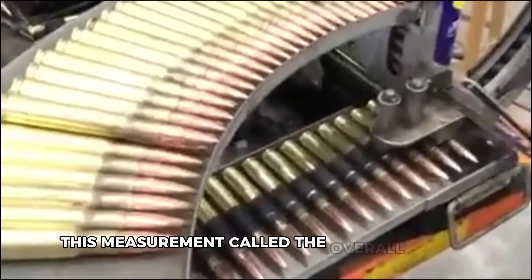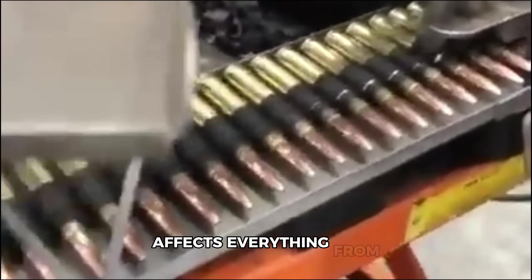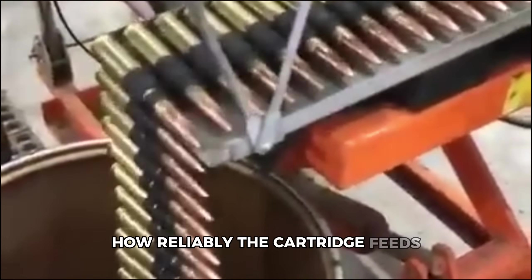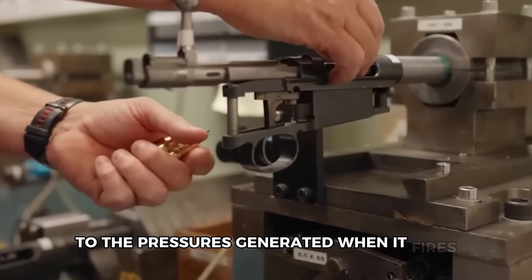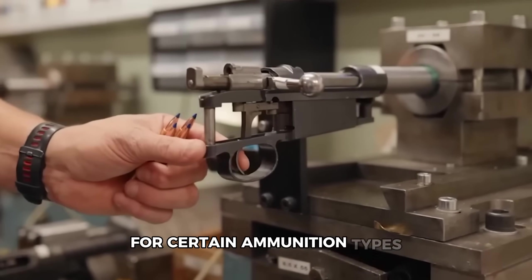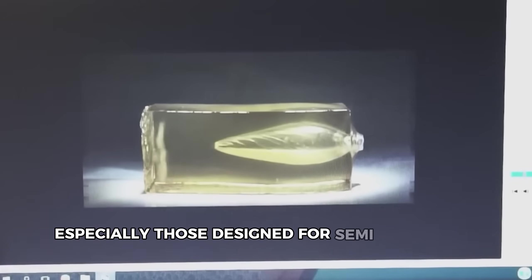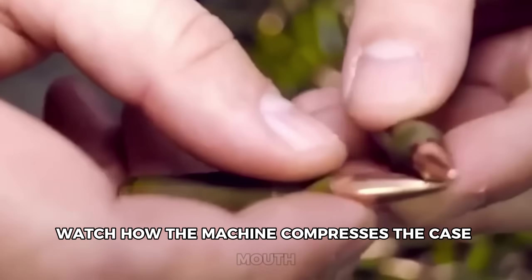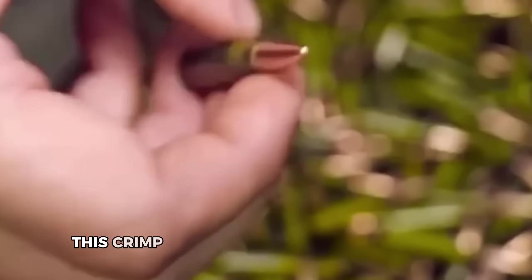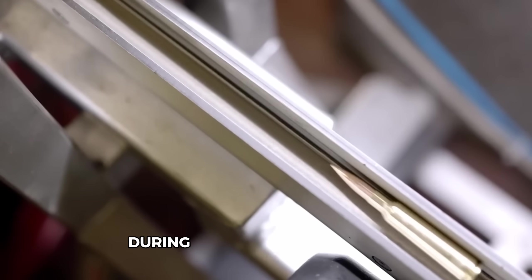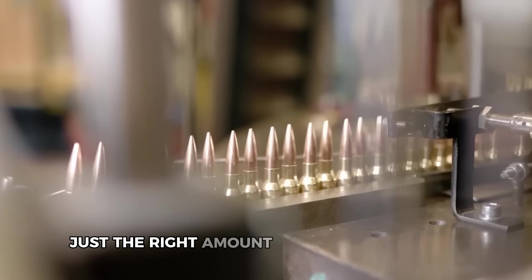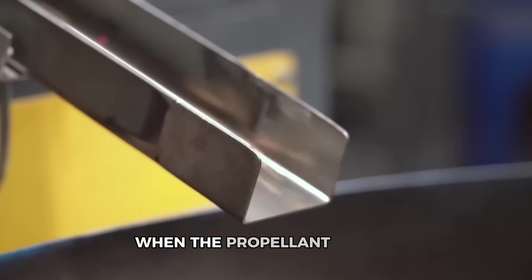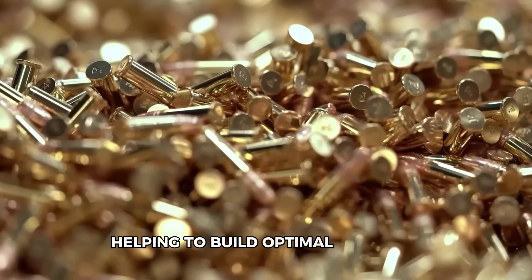This measurement, called the overall length, affects everything from how reliably the cartridge feeds to the pressures generated when it fires. For certain ammunition types, especially those designed for semi-automatic weapons or hunting, watch how the machine compresses the case mouth around the bullet. This crimp holds the bullet firmly in place during handling and provides just the right amount of initial resistance when the propellant ignites, helping to build optimal pressure.